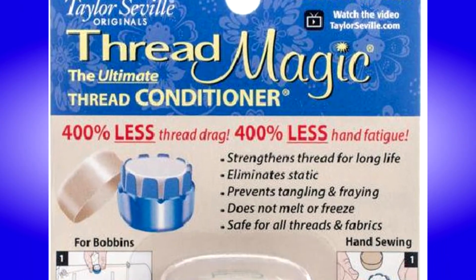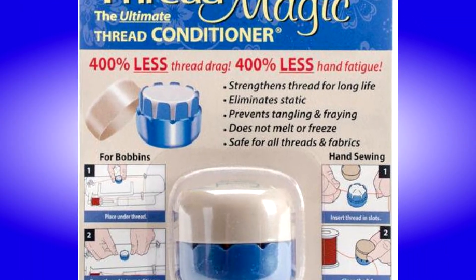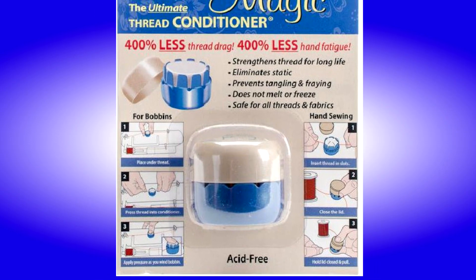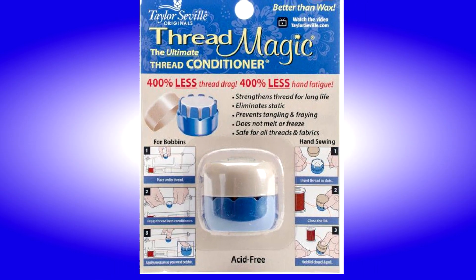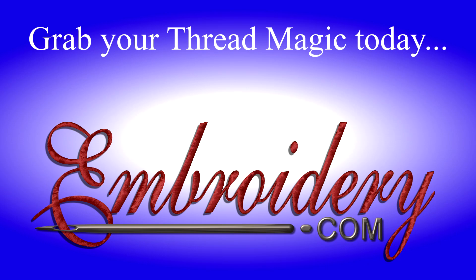This improves hand fatigue, thread drag, and also prevents tangles and fraying. So when working with metallic thread, a thread conditioner like Thread Magic is a must.